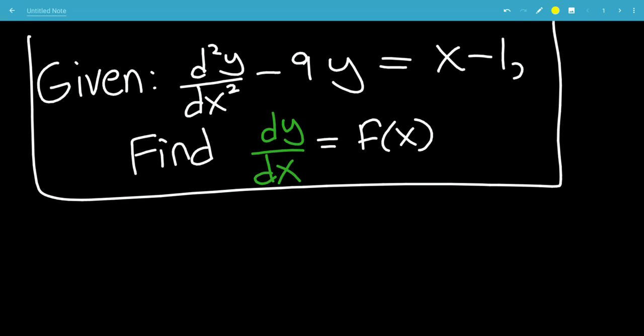In this video, we are given that d squared y over dx squared, the second derivative of y with respect to x, minus 9 times y equals x minus 1. We want to find dy dx as a function with respect to x only.